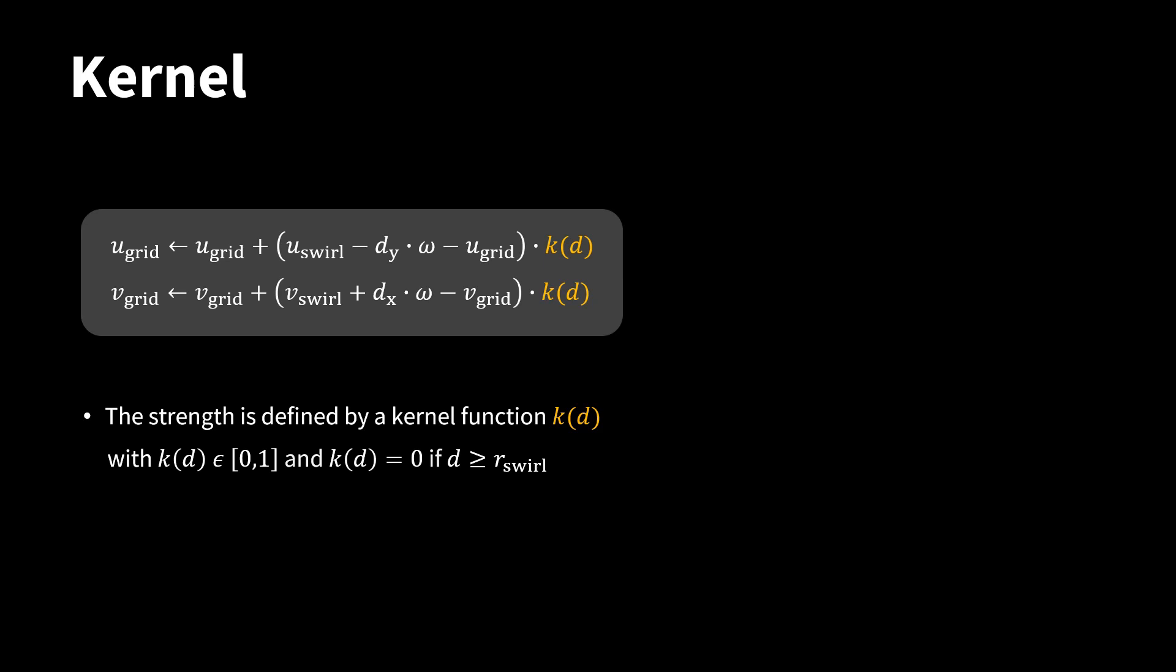The strength of this effect is defined by a kernel function k. k depends on the distance d between the swirl center and x grid. The function yields a value between 0 and 1. It is 0 when d is larger than the swirl radius. I use a very simple kernel function. It is 1 up to a distance of 0.8 times the swirl radius. Then it decreases linearly to 0.